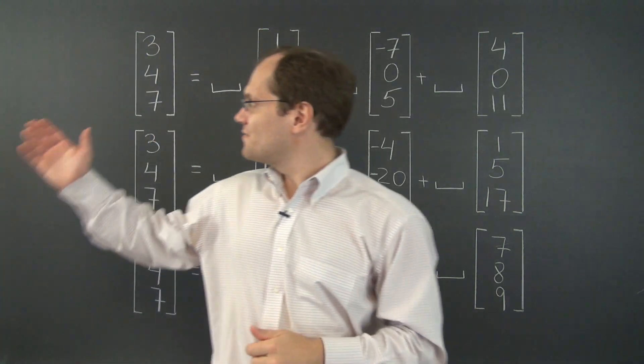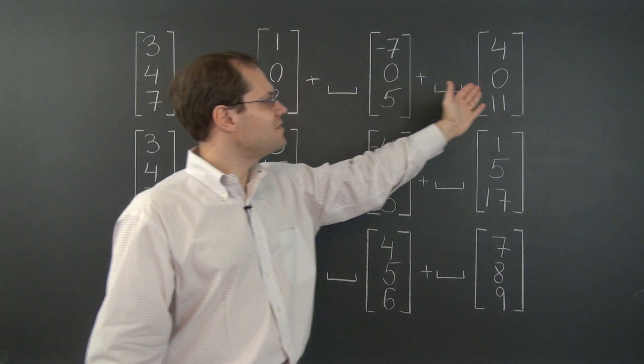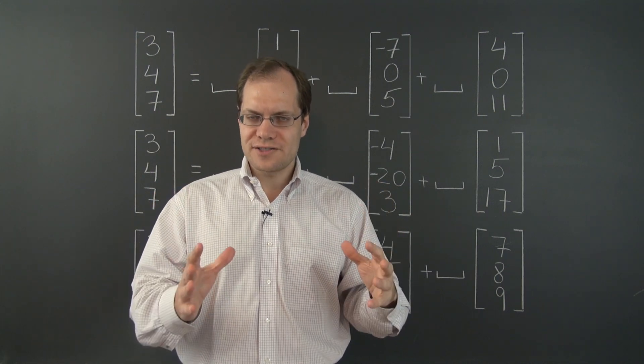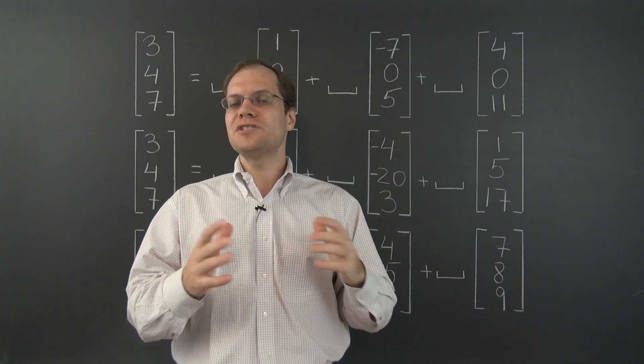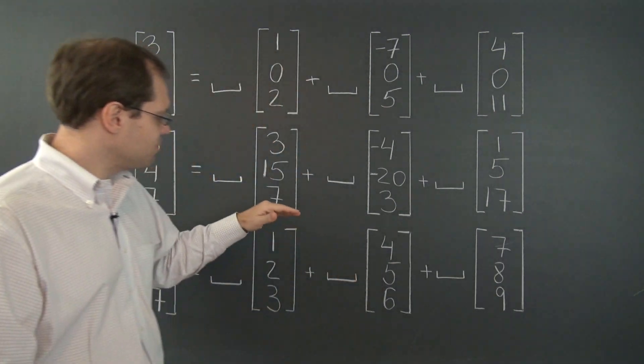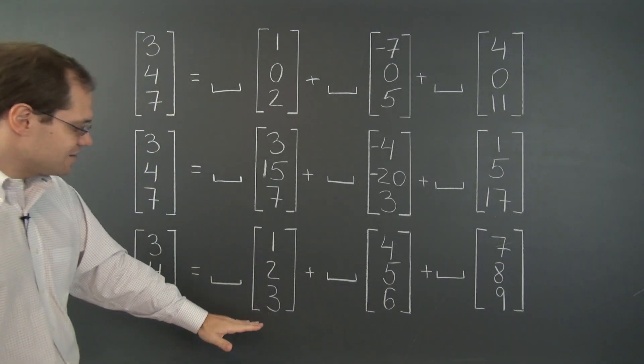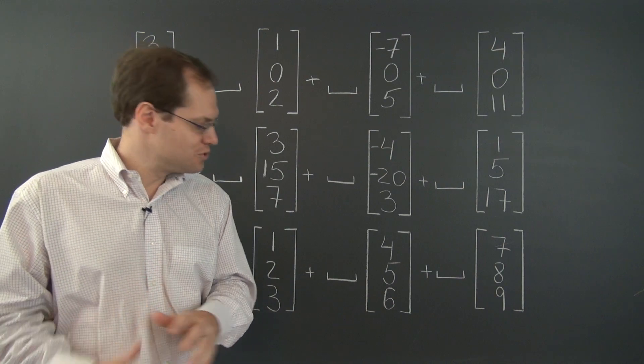Therefore, this vector cannot be represented as a linear combination of these three vectors. And we have thus solved the first impossible decomposition problem in R^3. And it was pretty simple. The second problem that we're about to discuss is just a little bit harder. And finally, the third problem will be definitely more interesting than the first two.